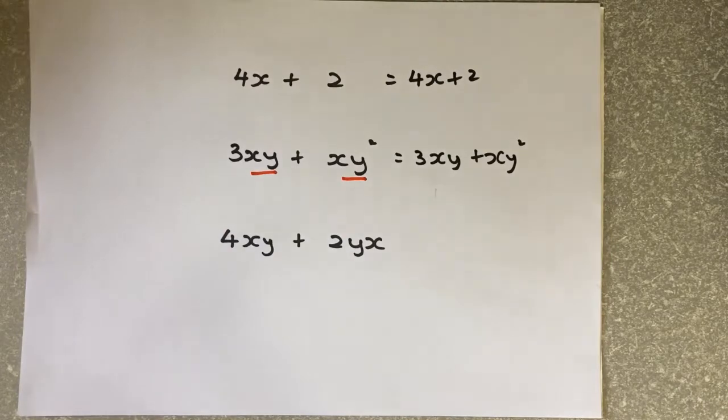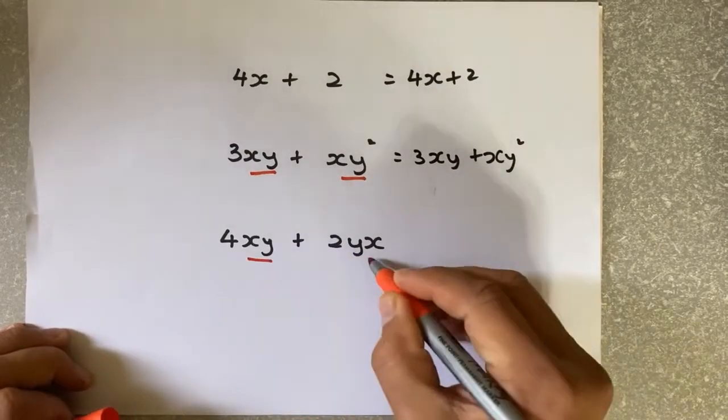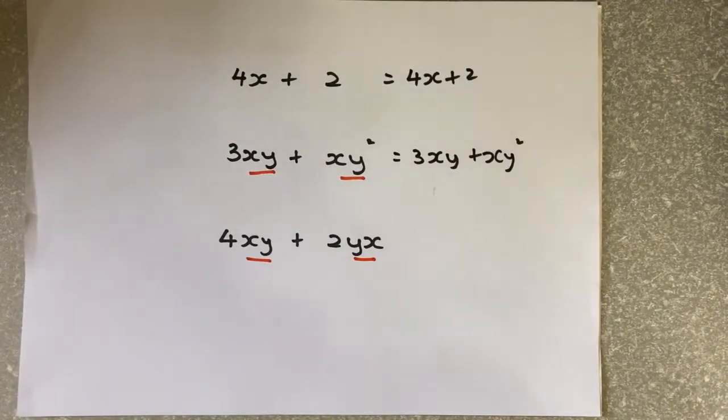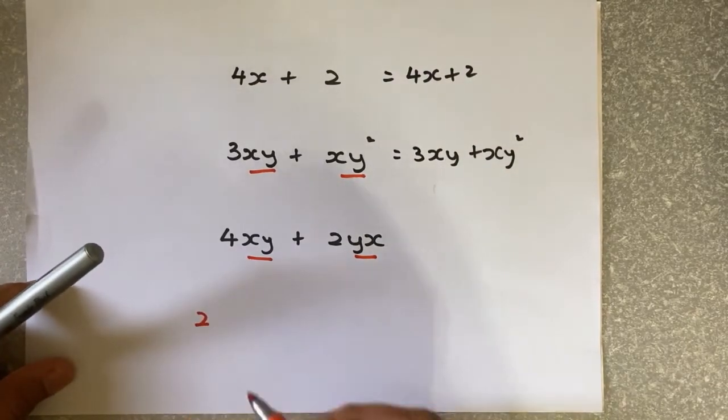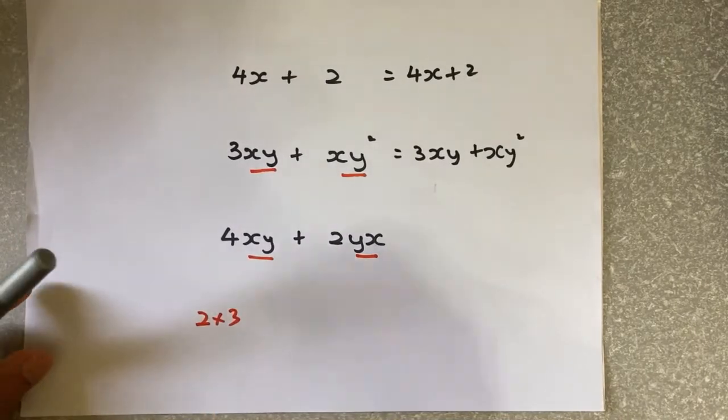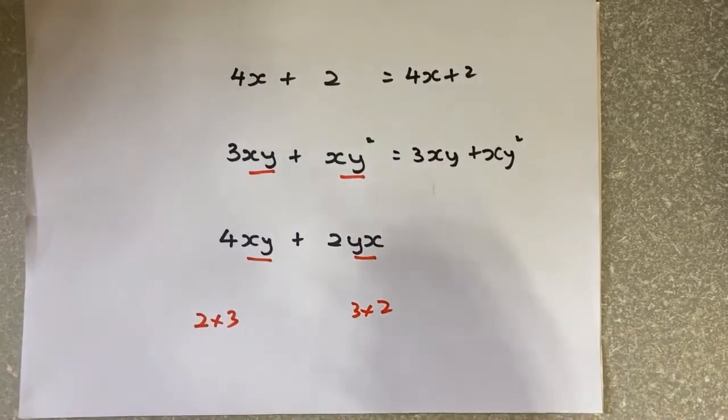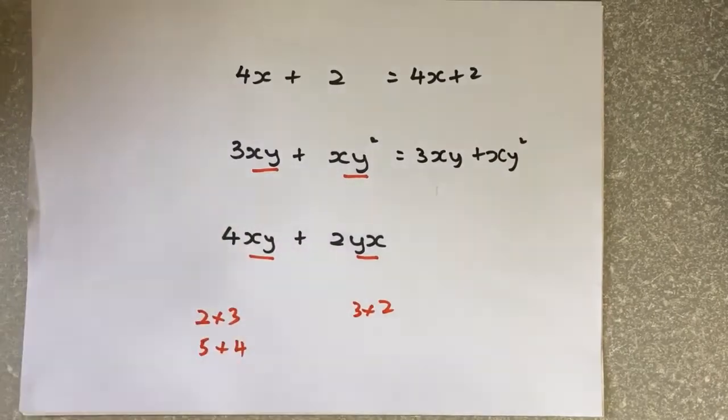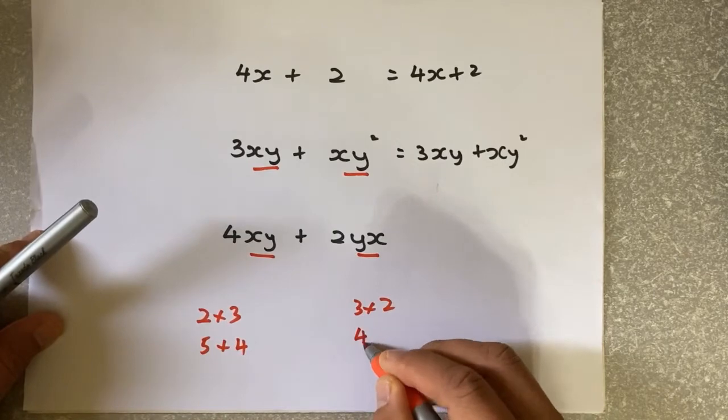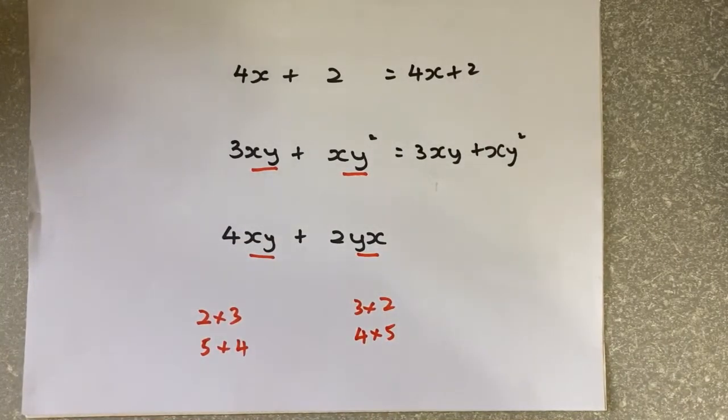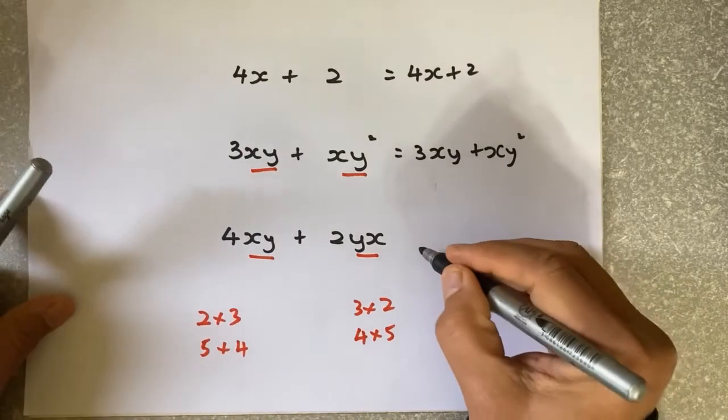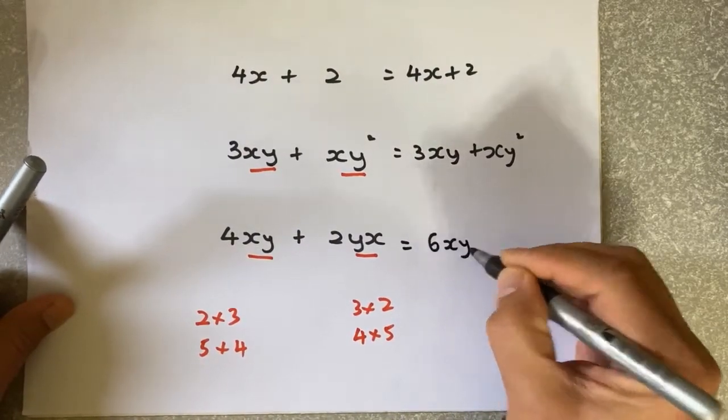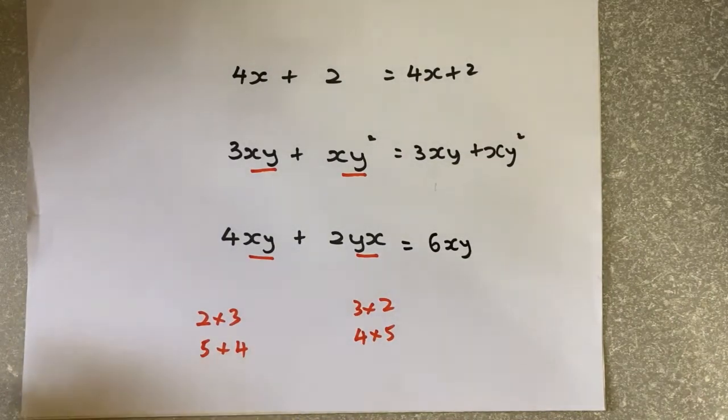The last one is where there's a lot of confusion. 4XY and 2YX - are XY and YX the same family? Just imagine X and Y are numbers. If X is 2 and Y is 3, is 2 times 3 the same as 3 times 2? They're the same. Another example: if X is 5 and Y is 4, is that the same as 4 times 5? Technically, XY and YX are the same, just arranged differently. So they're the same family and you can add them up. 4XY plus 2YX is actually 6XY. In algebra, it's technically important that you put X before the Y.